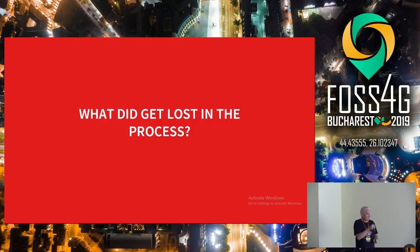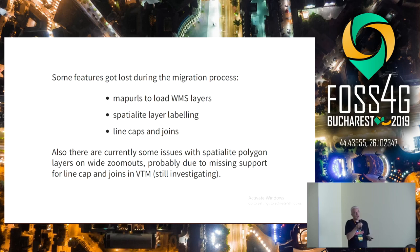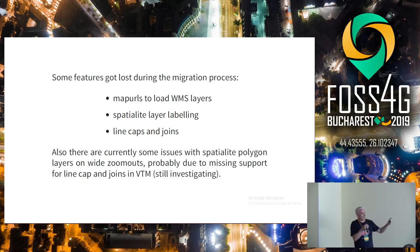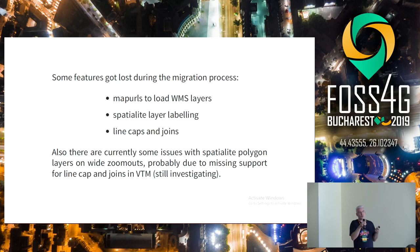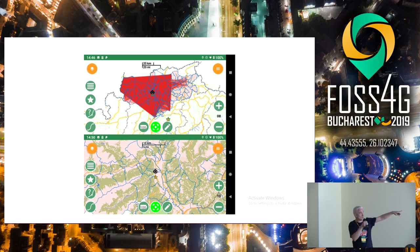So what did we get lost in the process? Well, first of all, a couple of features like WMS support — it's possible to bring it back, but it's quite some work, so for now it's been left out. There is also an issue with special light labeling, so right now you can visualize special light layers but you can't set layers on top of them. And VTM has poor support for line caps and joints, which means strange things happen on edges. On wide zoom outs, polygon layers can show strange artifacts, whereas if you zoom in they disappear. We are investigating this with the VTM community.